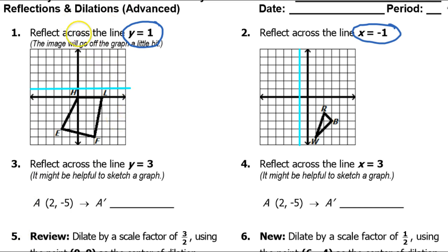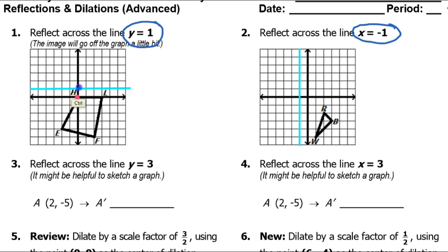So when you do your reflection across this line, be careful to ignore the x-axis — it's tempting to fall back on the x-axis as a common reflection line, but you've got to use this new one. So if I want to find the image of point h, I'm going to go the same distance on the other side of the line. This point is 1 below the line, so I'm going to go 1 above the line, and that'll be my new point h-prime.